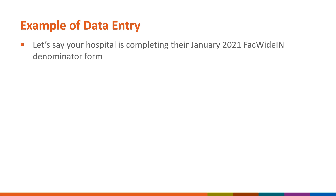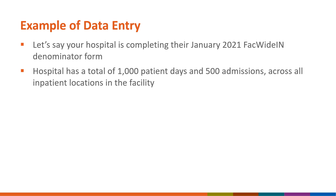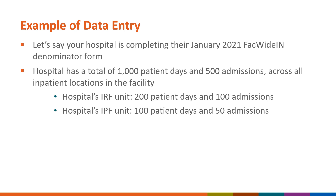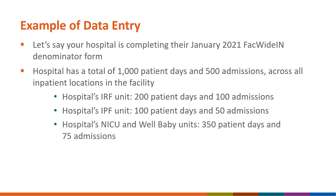Let's walk through an example of how a hospital should report their FACWIDEIN denominator record. In our example, the hospital had a total of 1000 patient days and 500 admissions across all inpatient units during the month of January 2021. The hospital has an IRF unit which had 200 patient days and 100 admissions, and an IPF unit which had 100 patient days and 50 admissions. Finally, the facility has several NICU and well baby nurseries, which contributed a combined total of 350 patient days and 75 admissions.